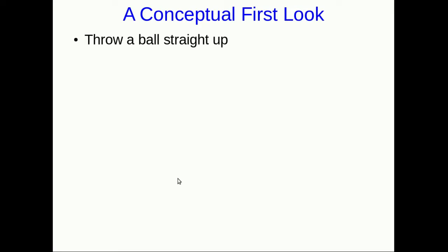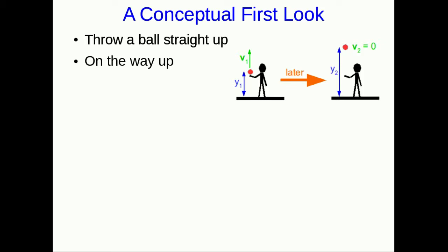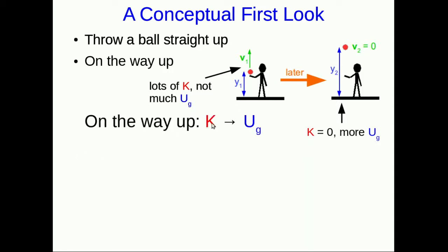So a perfectly good alternate name for this course would be how many ways can we describe a ball being thrown up into the air? So well, let's do it again, but this time we'll use energy. So you throw a ball straight up, and on the way up, it starts off just as it leaves your hand and it's going fast. And so it has a lot of kinetic energy, but it's low down, so it has not much gravitational potential energy. But now a little later, it's at its maximum height, and so it's momentarily at rest. So at that instant, it has no kinetic energy, but it has gone higher, and so it has more gravitational potential energy. And so what we can say is that on the way up, its kinetic energy was transformed into gravitational potential energy.